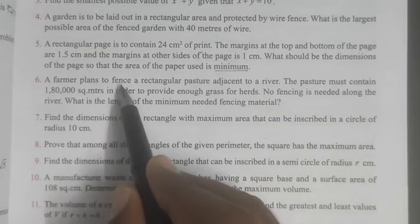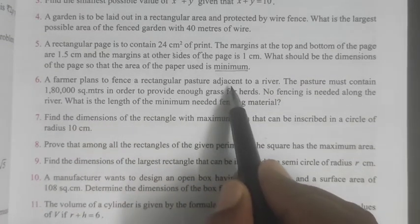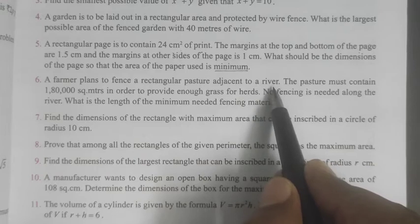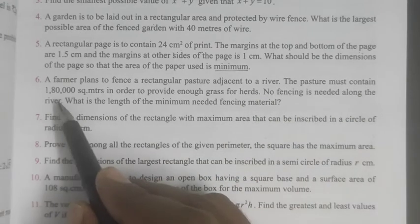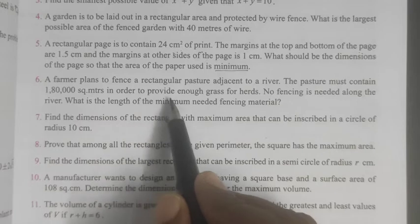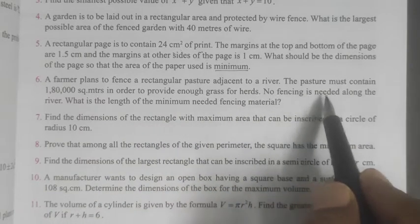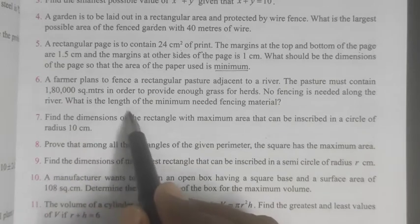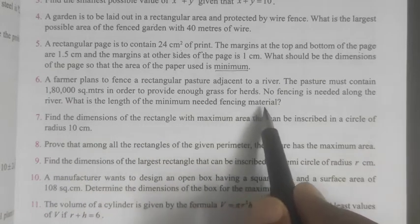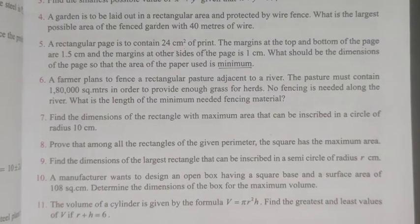A farmer plans to fence a rectangular pasture adjacent to a river. The pasture must contain 180,000 square meters in order to provide enough grass for herds. No fencing is needed along the river. What is the length of the minimum needed fencing material? I will tell you.